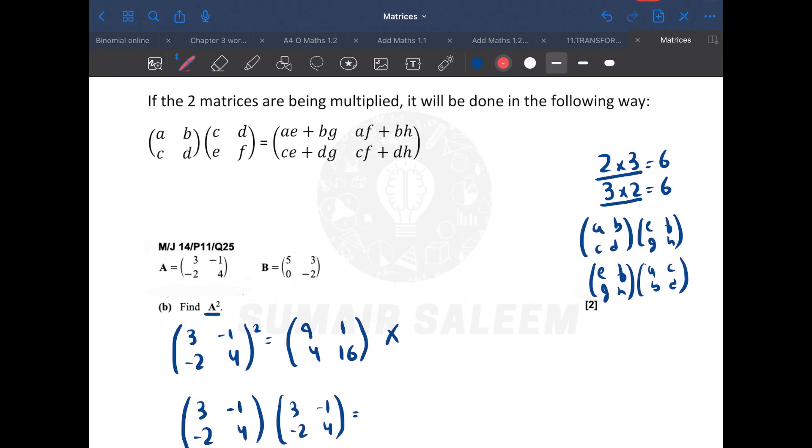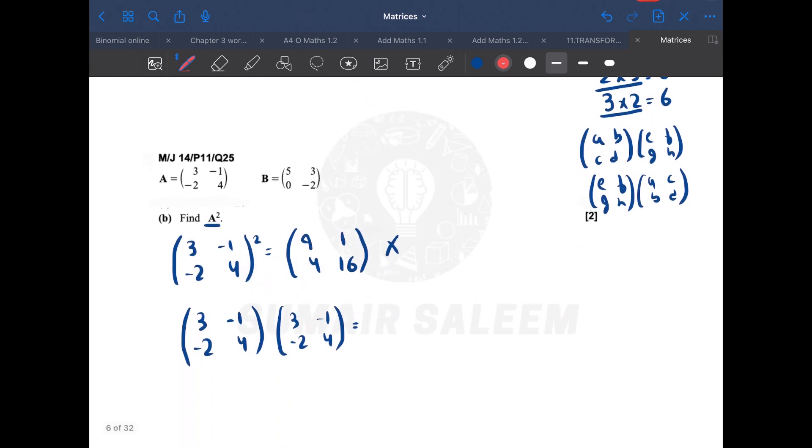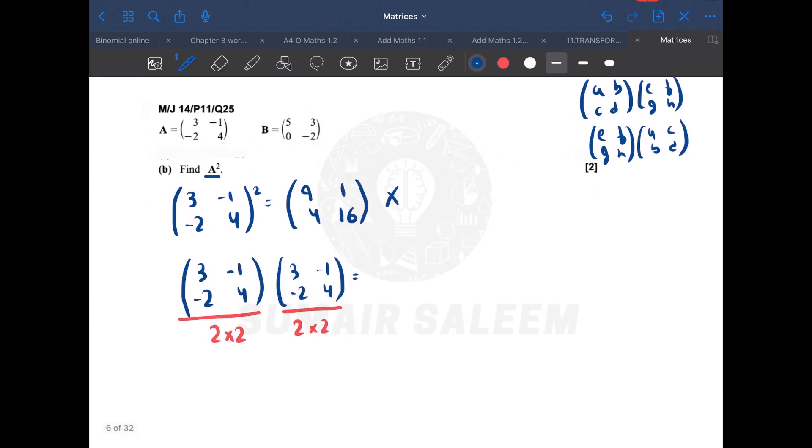Guys, first step is to check the order of the matrix. If I notice, what's the order of this matrix? 2 by 2. And what's the order of this matrix? 2 by 2. Do you get this? Then you have to focus on the first matrix's column and the second matrix's row. If they both are the same, then only multiplication is possible. Otherwise, write not possible.